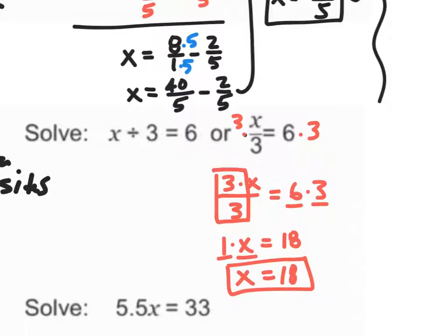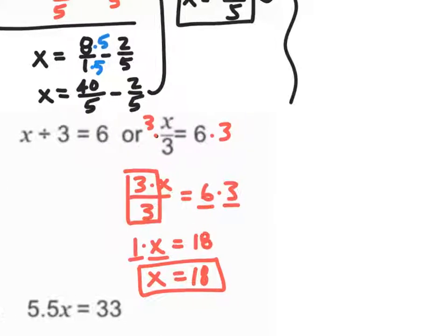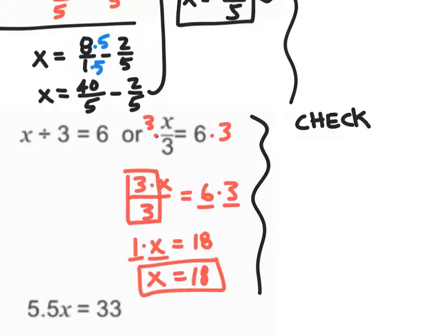Let's go ahead and check this. I'll plug my value for x back into the original equation: 18 divided by 3, is that equal to 6? 18 divided by 3 is 6, and 6 is equal to 6 — that's true, so therefore that is correct.